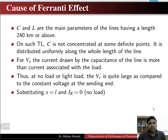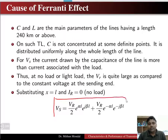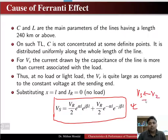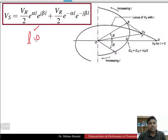We have seen the equation for the long transmission line. In the equation for the long transmission line, if we substitute x equal to L and IR equal to 0 — meaning no-load condition — we get the equation relating the sending end voltage VS to the receiving end voltage VR. At L equal to 0, substituting gives VS equal to VR/2 plus VR/2, which equals VR.